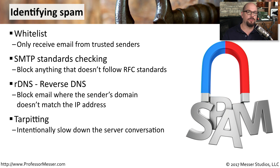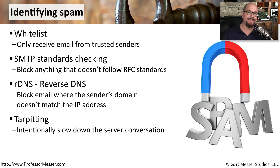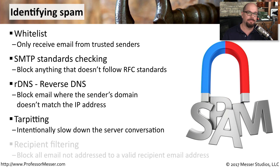Another way to look for spam is to implement tar pitting on your email gateway. This is when you slow down the conversation between your email gateway and the sending email gateway. Spammers don't like to be slowed down — they like to send as many emails as possible. And if your email gateway is slowing down the conversation, the idea is that they will eventually give up and not send any spam at all.